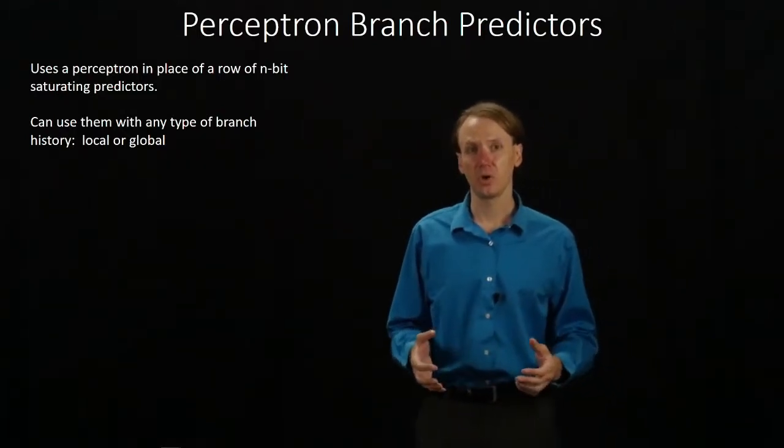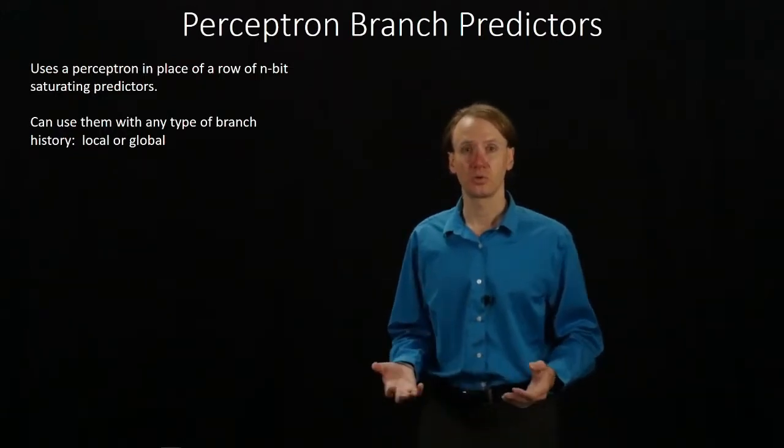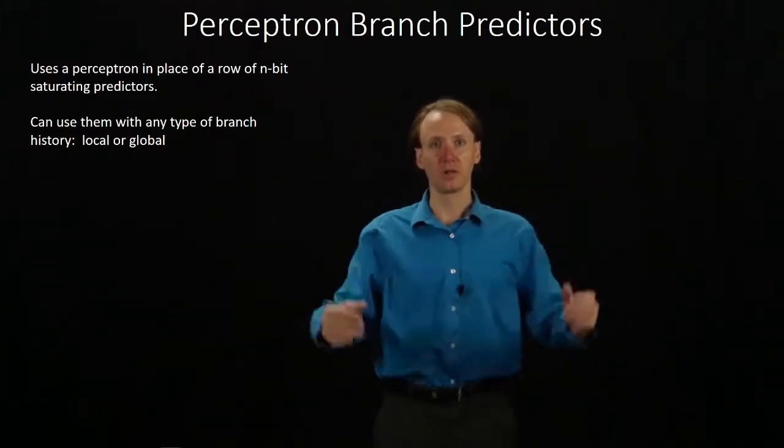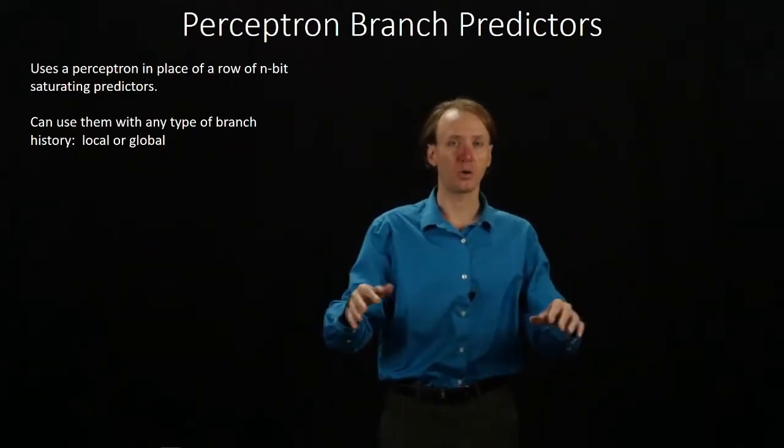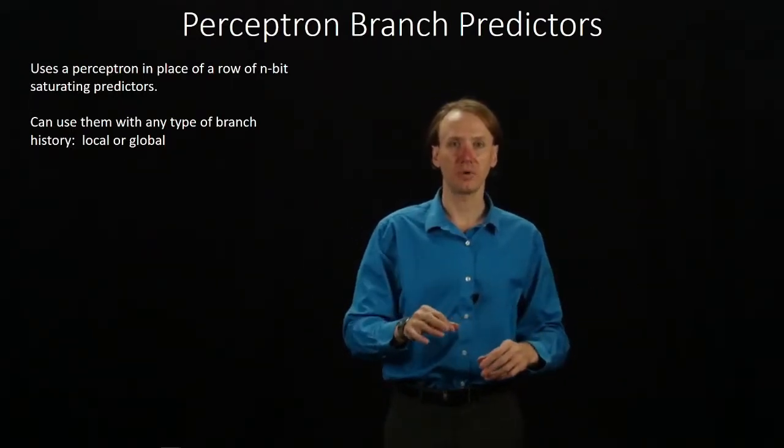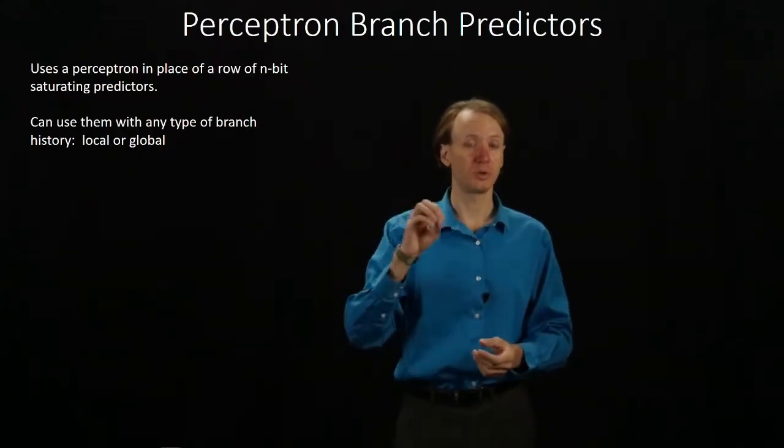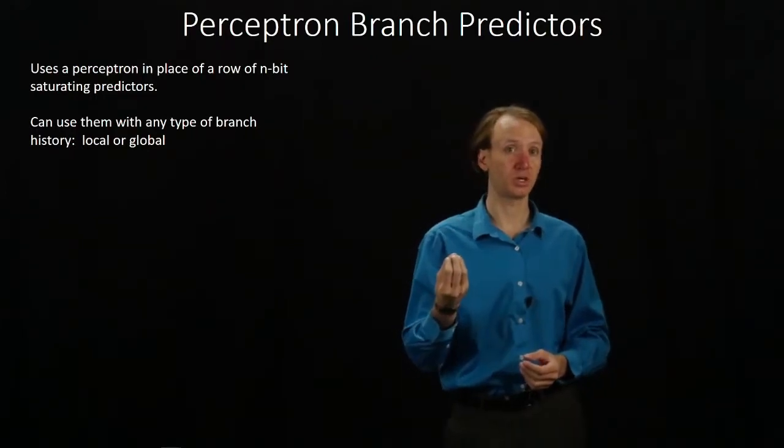This time, though, we're going to replace a huge chunk of those n-bit saturating predictors with perceptrons. With our mn branch predictor, we had a huge table that was indexed based on the address of our branch, and then we'd walk down that row and find one predictor based on whatever the global or local branch history was. We'd pull out that one n-bit branch predictor and use that to make our prediction.